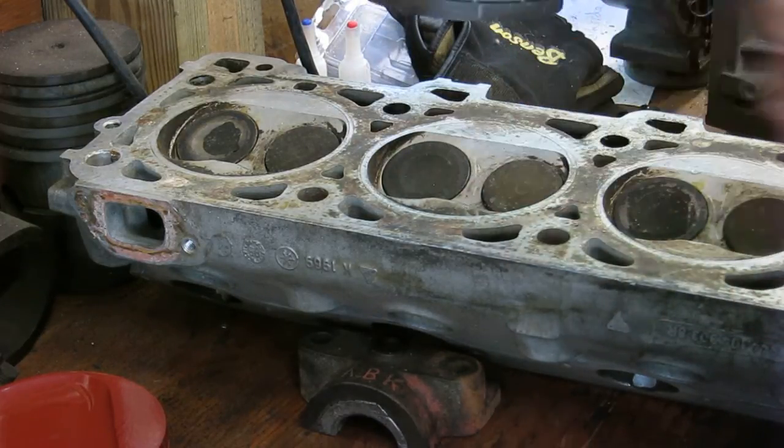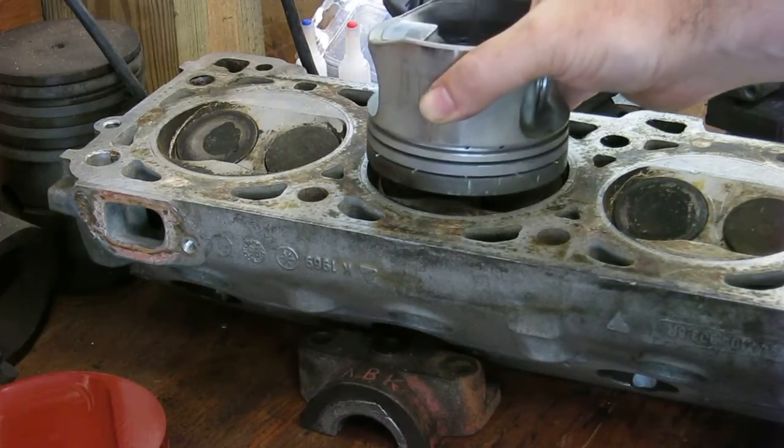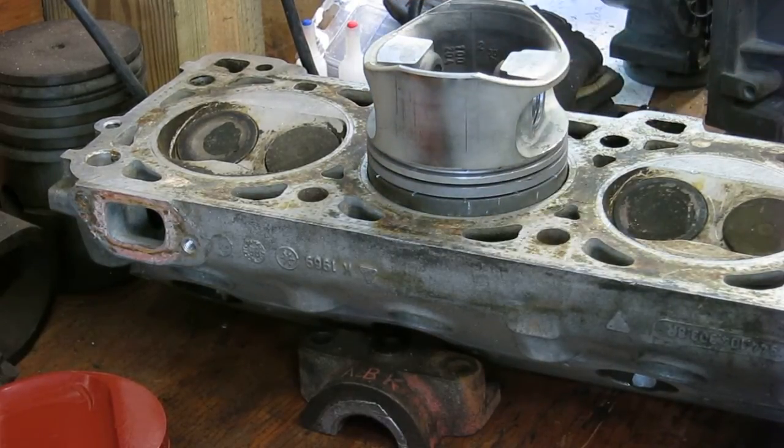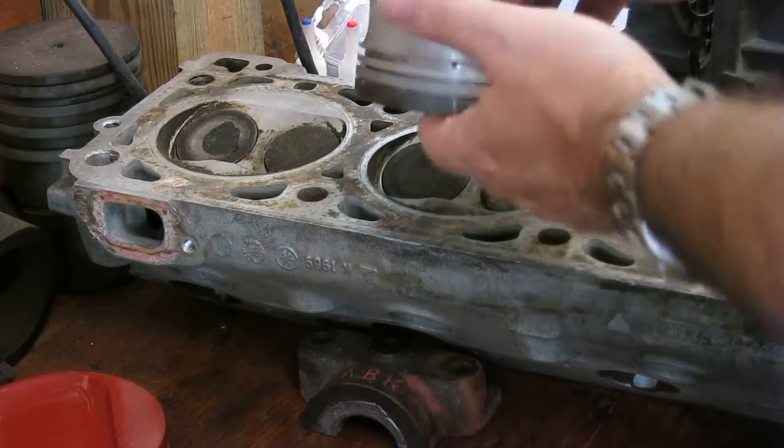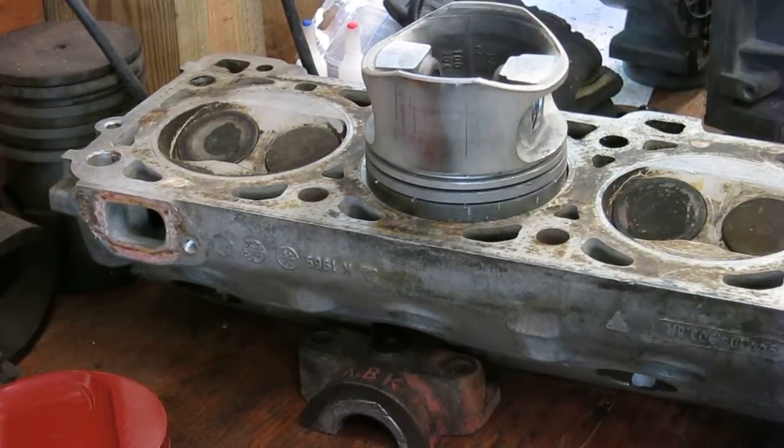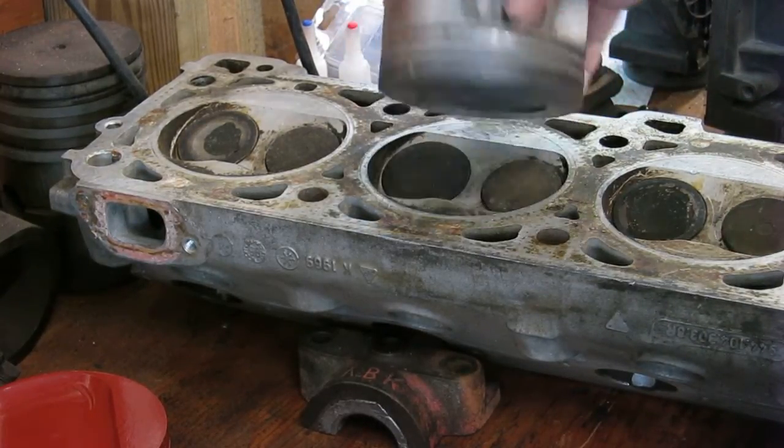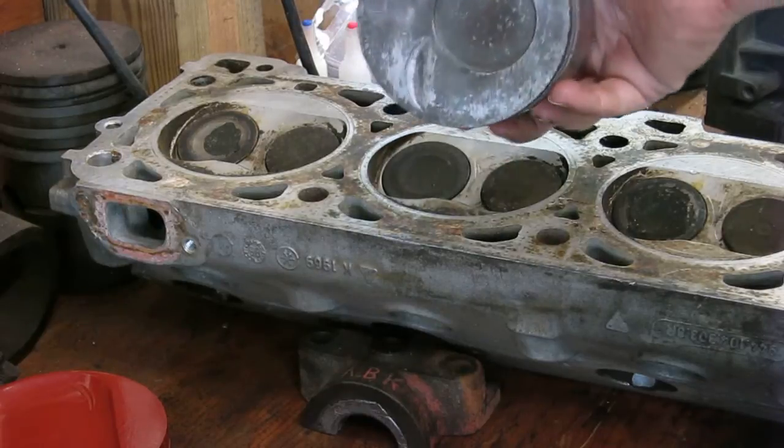So if you start out with 600 cc's and it compresses down to 60 cc's, that's a 10 to 1 compression ratio. And so that's how they do that.